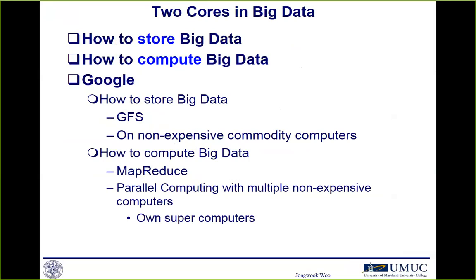As you already know, when you have big data — when you have a larger scale data set — there are two issues. One is how to store the data, and the second one is how to compute that larger scale data set. Google had this issue for their business logic, so they built Google File System, GFS, to store large scale data sets on commodity servers, which cost around $4,000 to $10,000. That is still not that expensive comparing to supercomputers.